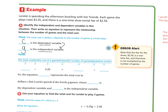So the total cost, or C, equals $3.25 times the number of games she plays, plus $2.50 for the shoe rental. So the equation is C equals 3.25G plus 2.50.